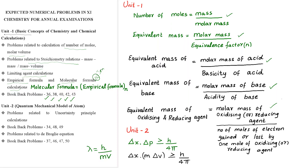Next unit is the Quantum Mechanical Model of Atom. This unit covers uncertainty principle calculation related problems and the de Broglie equation related problems. Uncertainty principle related bookback questions: 34, 48, 49.